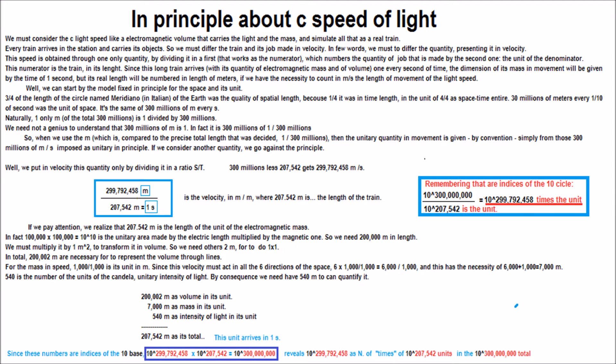299,792,458 is the velocity in m per m, where 207,542 m is the length of the train.